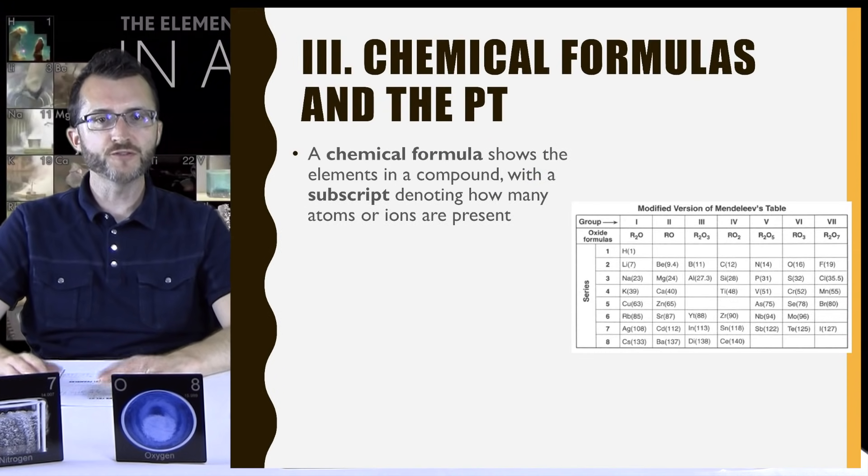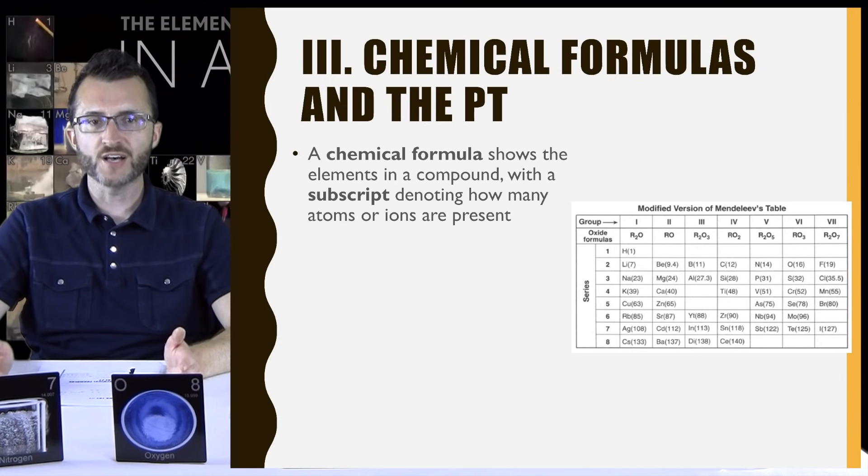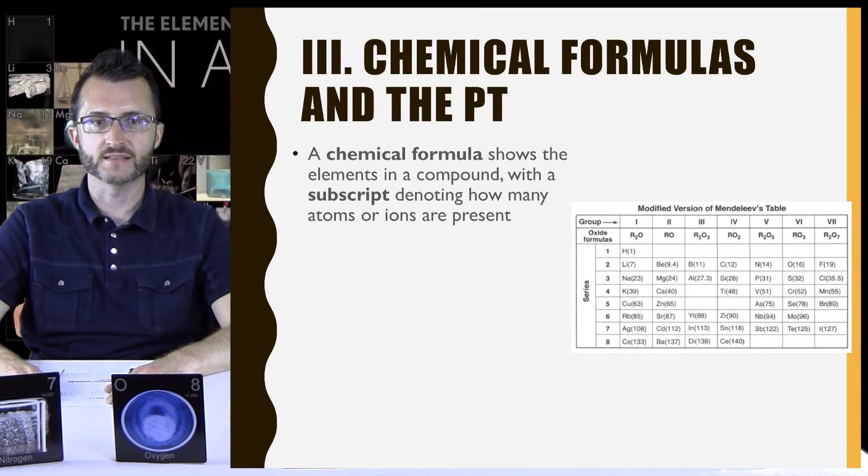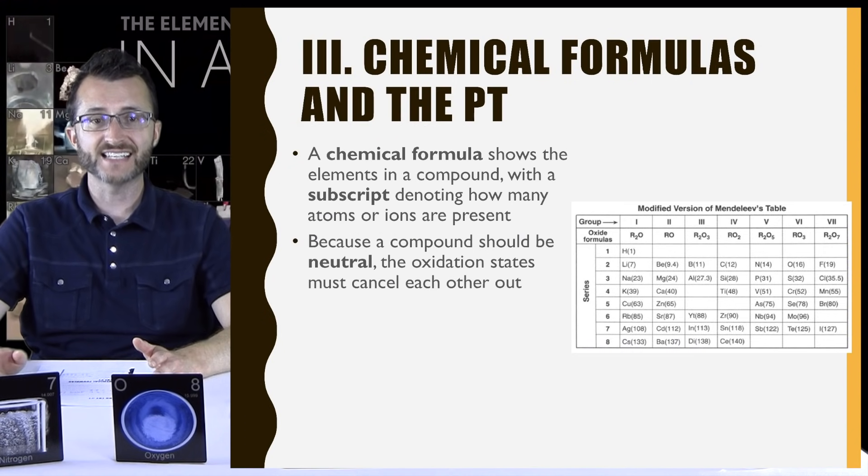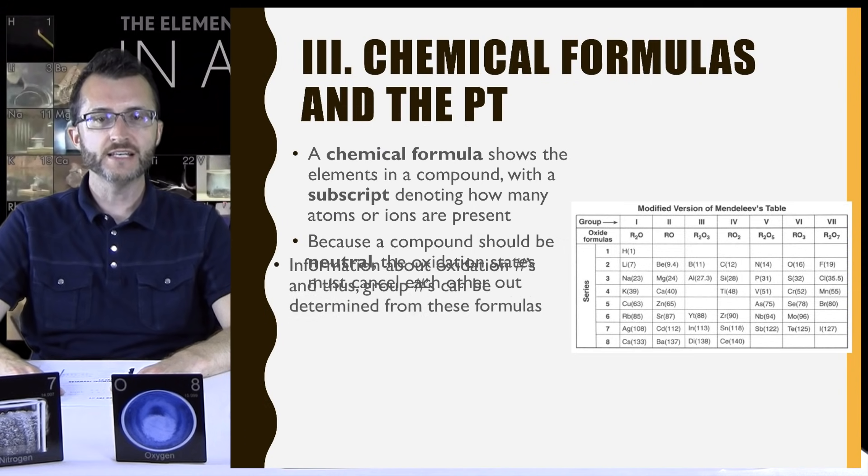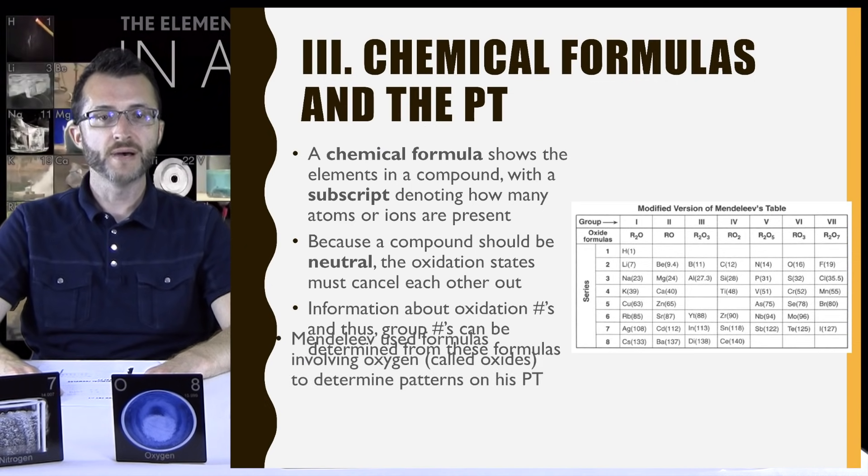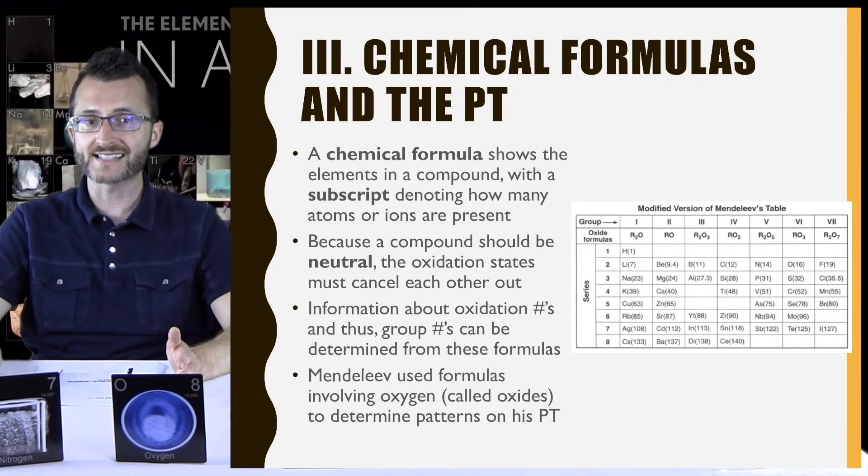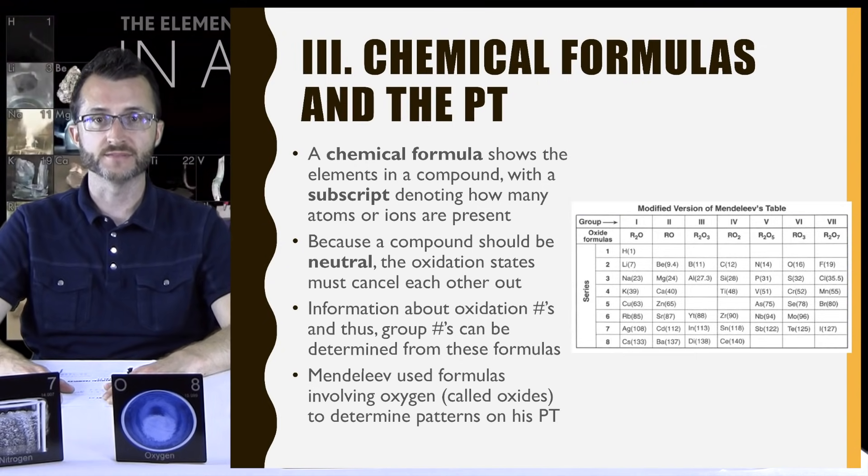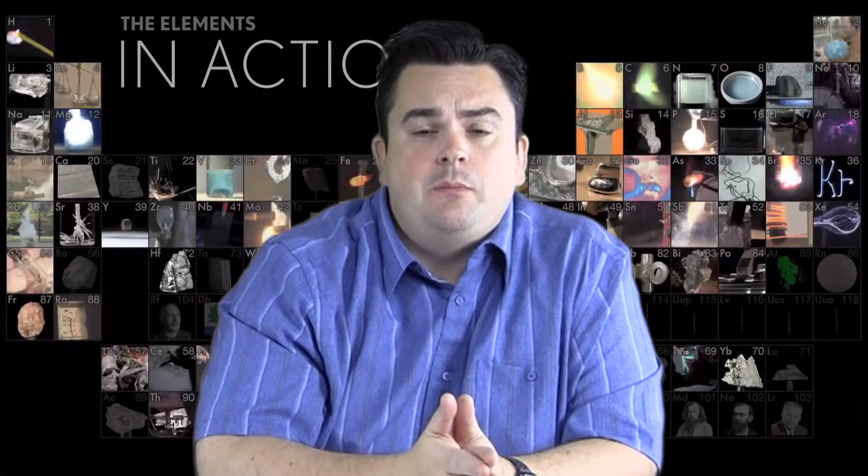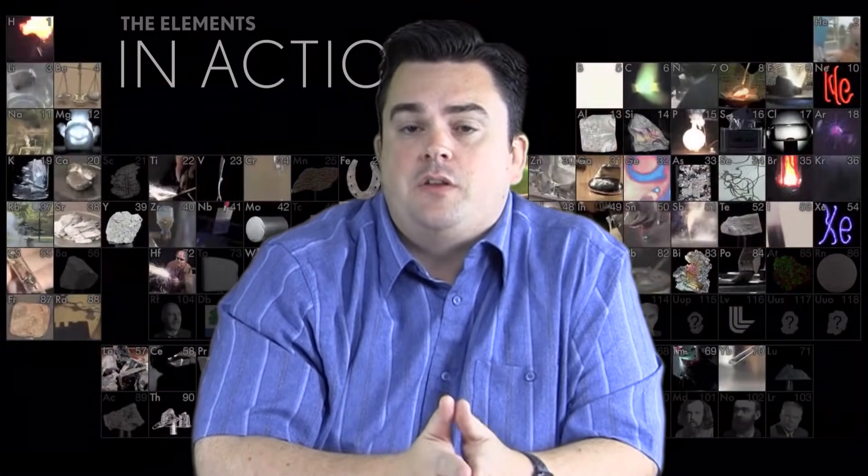Chemical formulas and the periodic table. A chemical formula shows the elements in a compound with a subscript denoting how many atoms or ions are present. Because a compound should be neutral, the oxidation states must cancel each other out. Information about oxidation numbers and thus group numbers can be determined from these formulas, as we'll see in a bit. Mendeleev used formulas involving oxygen called oxides to determine patterns on his periodic table. So don't worry too much about those subscripts and getting proper formulas just yet. We will cover that in a future unit. It's important to put oxide formulas in here with this unit on the periodic table, because Mendeleev used oxide formulas to group elements based on the way they reacted with oxygen.